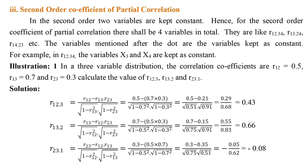Third, the second-order coefficient of partial correlation. In the second order, two variables are kept constant. Hence for the second-order coefficient of partial correlation, there shall be four variables in total. Examples are r12.34, r13.24, r14.23, etc. The variables mentioned after the dot are kept constant. For example, in r12.34, the variables x3 and x4 are kept constant.